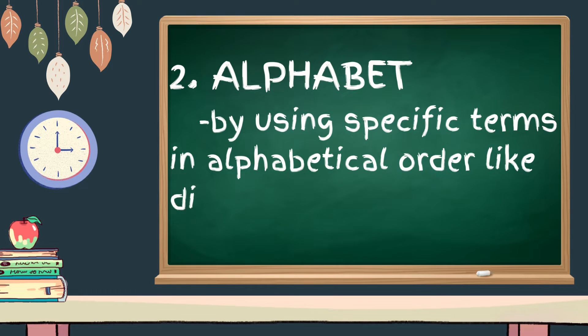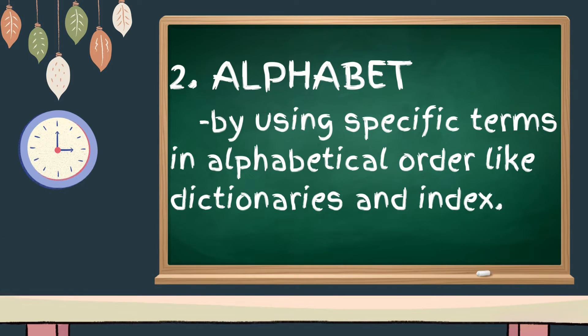Next one is alphabet. We can organize information using specific terms in alphabetical order like dictionaries and indexes. You can take a look on how words are arranged in the dictionaries. It is from A to Z.